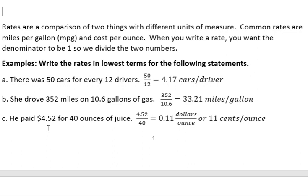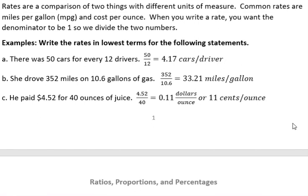Okay. He paid $4.52 for 40 ounces of juice. What we're interested in here is the cost per ounce of juice. So 4.52 divided by 40 and that gives you 0.11 dollars per ounce. Or you could say that's 11 cents per ounce. All right. That is rates and ratios. Have a fantastic day.